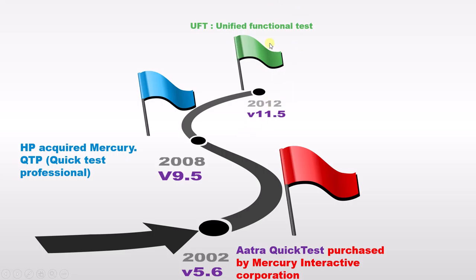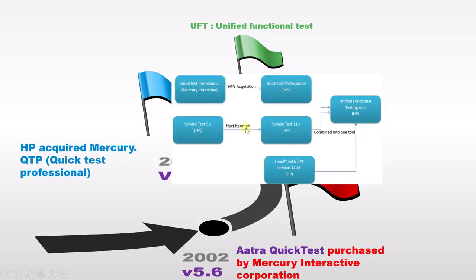Now let's see the overview of this development process — what is extra in UFT. Initially it was with Mercury Interactive with the name Quick Test Professional, then in 2006 HP acquired it and it became HP Quick Test Professional. Till then it was a standalone tool, but HP also had other tools like Service Test 9.x, which they developed until Service Test 11.x, and they also introduced one more tool, LeanFT.